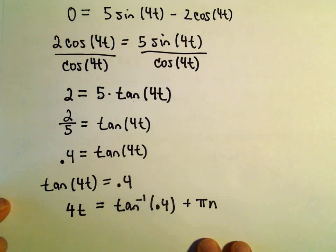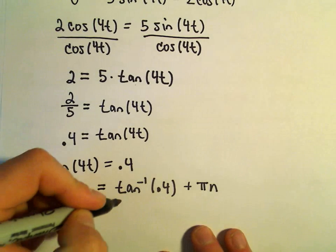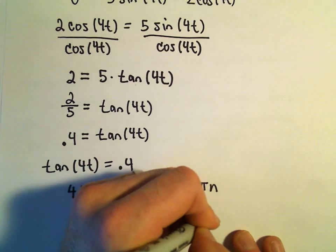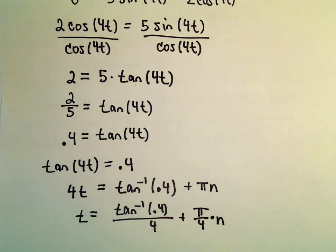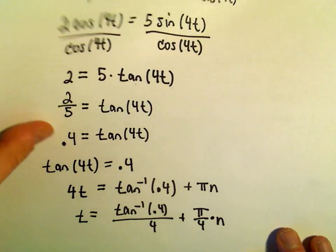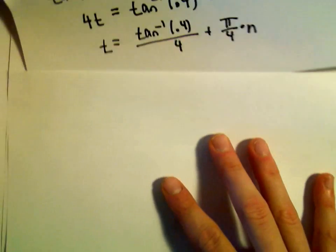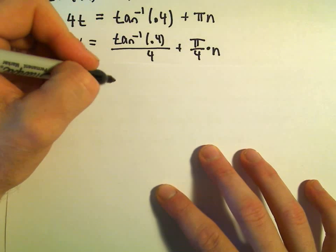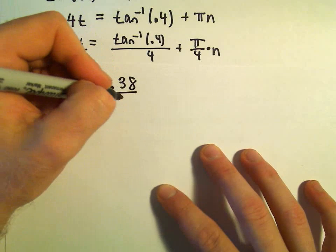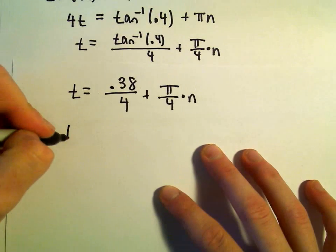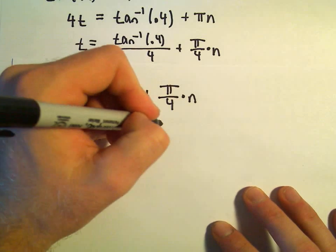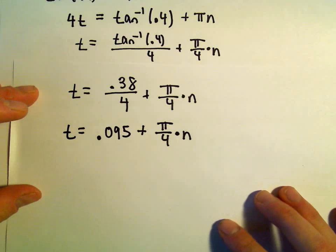Now what I'm going to do is just divide both sides by 4. So we'll simply get inverse tangent of 0.4 over 4 plus pi over 4 times n. I'm going to evaluate inverse tangent of 0.4. So I'm getting this to be, I'll have t equals the inverse tangent of 0.4, I'm getting that to be roughly 0.38 radians over 4, plus pi over 4 times n. So 0.38 divided by 4, that's 0.095 plus pi over 4 times n.